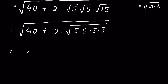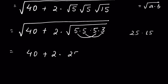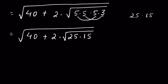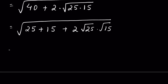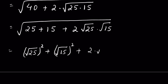So we have 40 + 2×√(25×15) under the square root. We can write 40 as 25 + 15, giving us 25 + 15 + 2×√25×√15 under the square root. Now, 25 = √(25²) which equals 25, and 15 = √(15²) which equals 15, so we have √(25²) + √(15²) + 2×√25×√15.